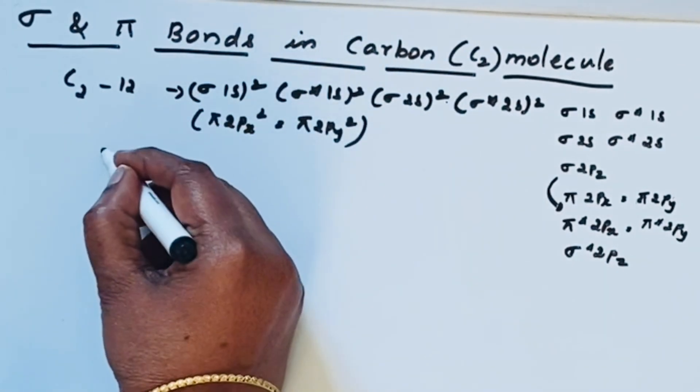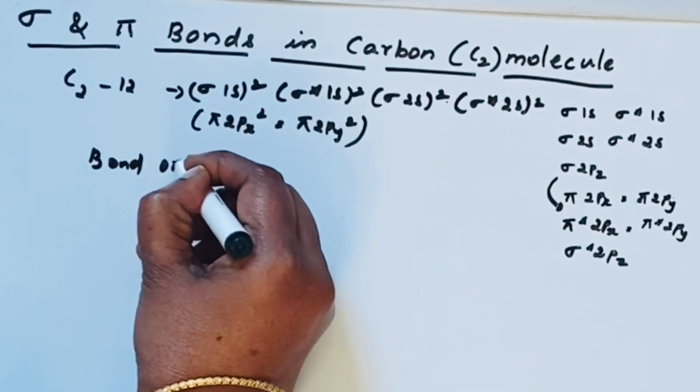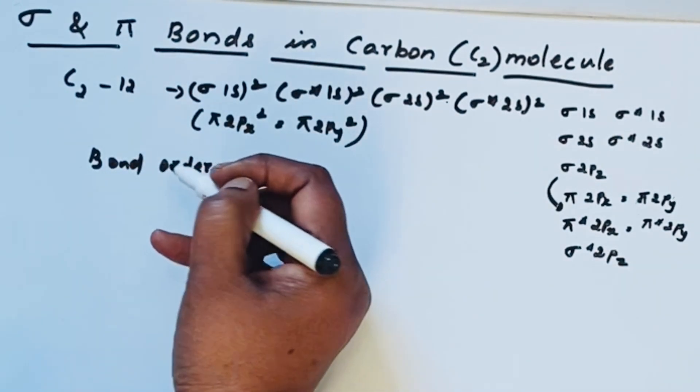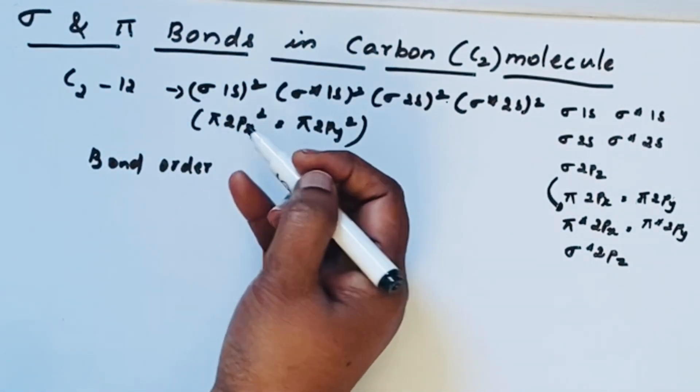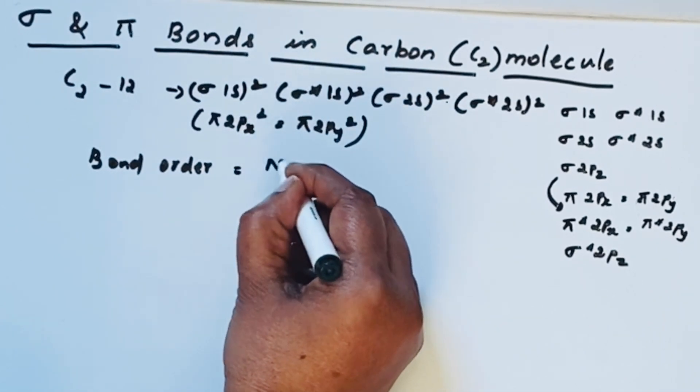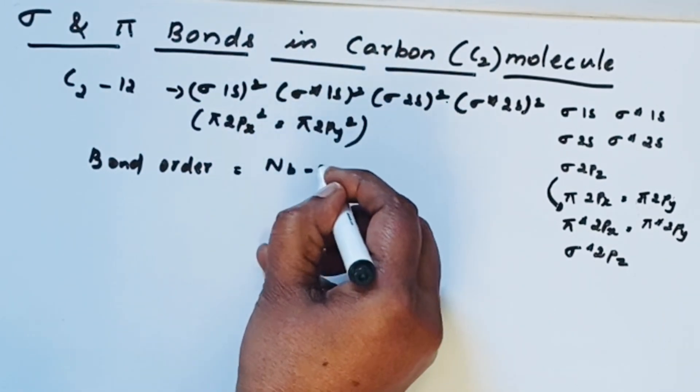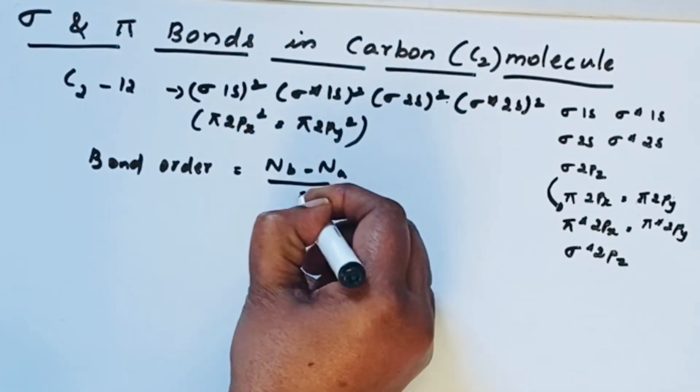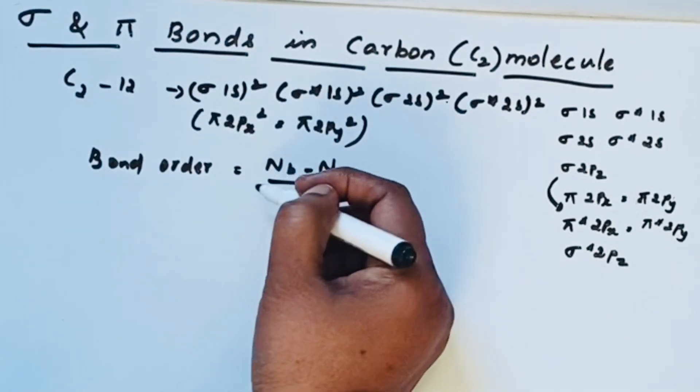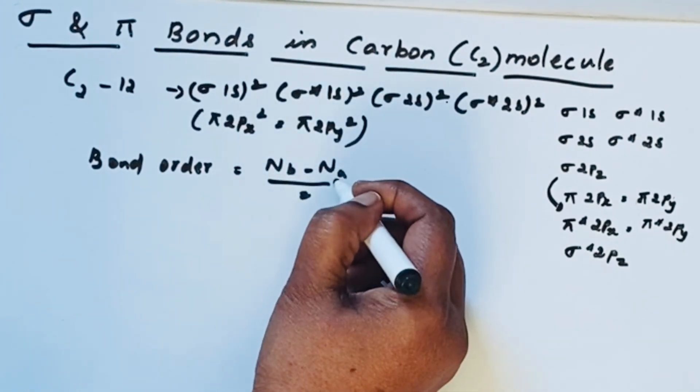From this now we can write the bond order. Because the bond order helps to know about how many sigma and pi bonds are present. So the formula for bond order is Nb minus Na by 2. Here Nb is the number of bonding electrons and Na is the number of antibonding electrons.